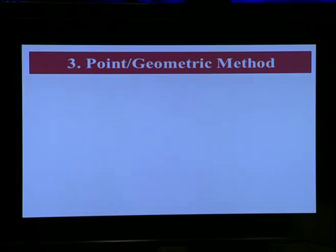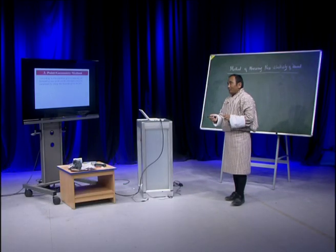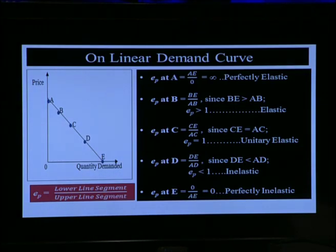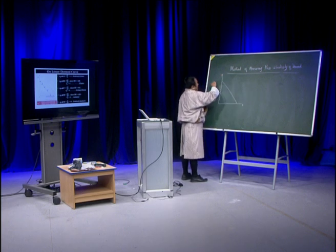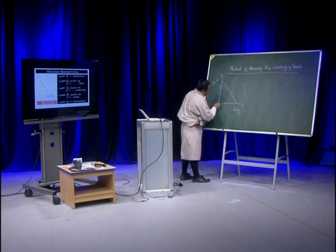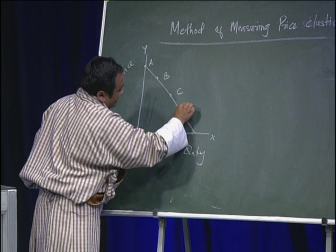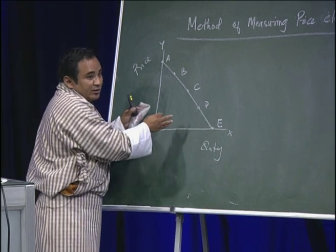We have one last method to calculate price elasticity of demand: the point or geometric method. According to this method, price elasticity of demand at any point on the demand curve is measured using the formula: price elasticity of demand = lower line segment divided by upper line segment. Here we have an example with a demand curve showing price and quantity, with points A, B, C, D, and E.